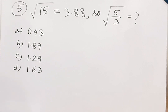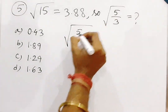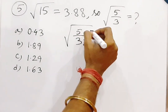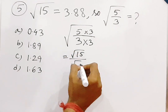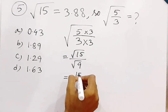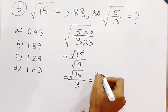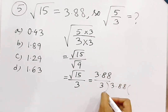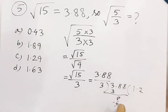Now the question is: given root 15 equals 3.88, find root of 5 by 3 equal to question mark. This is a tricky question. We rewrite 5/3 as 15/9, so root(5/3) = root(15) by root(9) = root(15) by 3. Since root 15 equals 3.88, dividing 3.88 by 3 gives approximately 1.2933. So C is the answer.